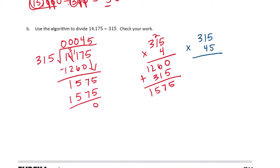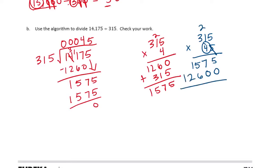So we'll start with 5 times 5 is 25, carry the 2. 5 times 1 is 5, plus 2 is 7. And 5 times 3 is 15. Put my 0 down. On to the 4: 4 times 5 is 20, carry the 2. 4 times 1 is 4, plus 2 is 6. And 4 times 3 is 12. If I add it together, I get 14,175, which is what I was dividing by. So it does work.